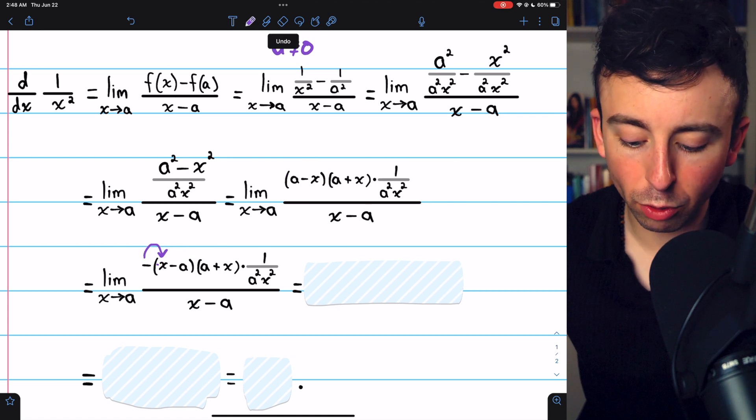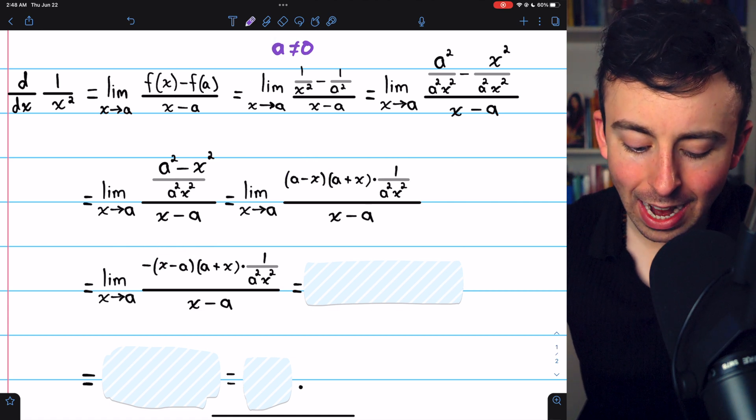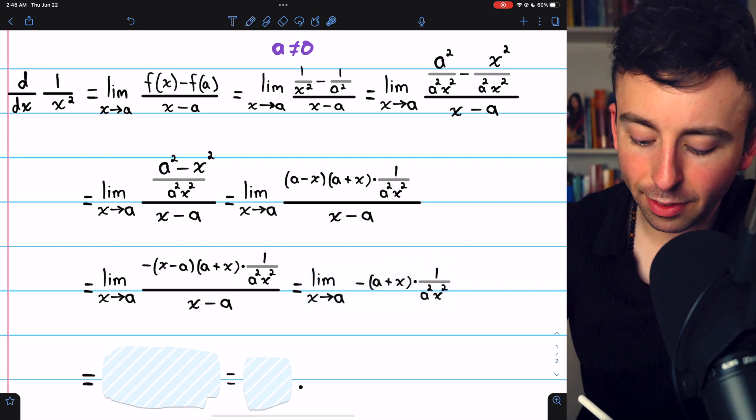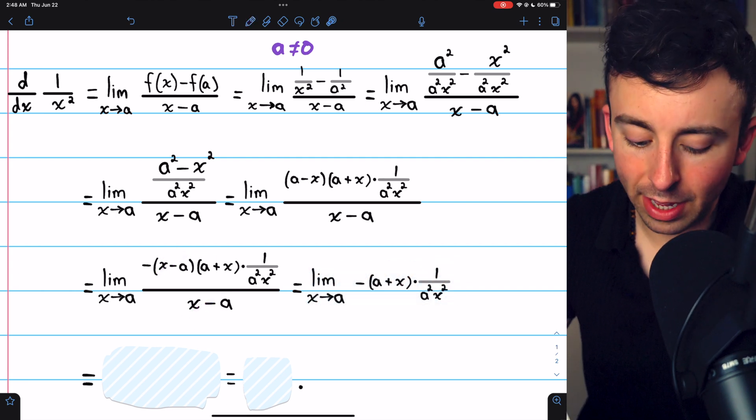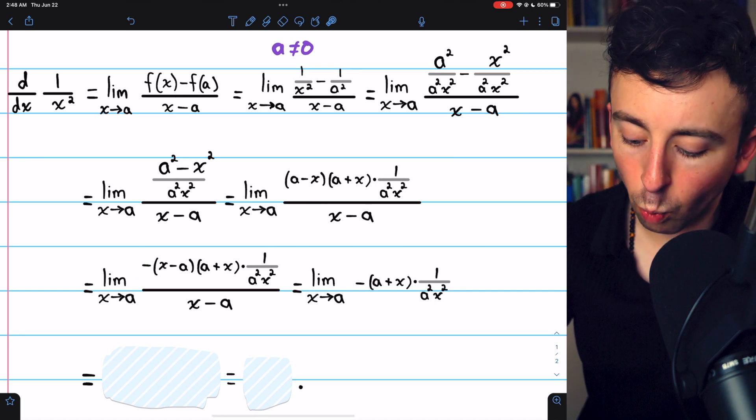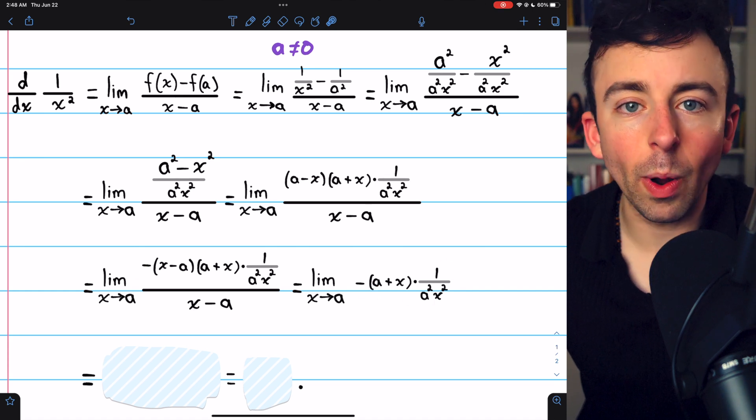So by taking out the negative, we've swapped the x and the a. And now it's clear we can cancel it out with the denominator. And once we cancel those out, all we're left with is the negative a plus x times 1 over a squared x squared.